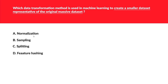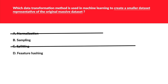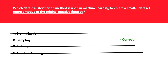The first option is normalization — normalization brings data down to a common scale, which is not what the question asks. Sampling does create a smaller dataset from the original massive dataset, so this looks to be the potential answer. Splitting is useful for dividing datasets but does not create a smaller representative sample of the original. Feature hashing is used for transforming text data into a set of features represented as integers, so that is also wrong. We are left with sampling, which is the correct option.